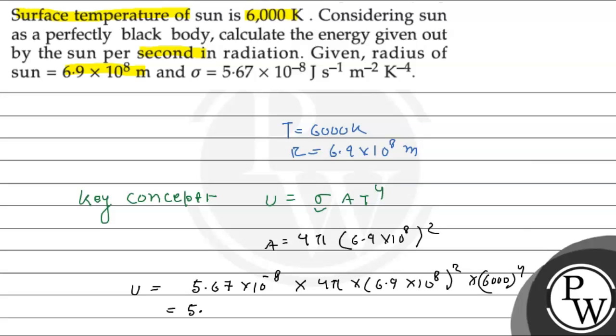This gives 5.67 into 10 to the power minus 8 into 4 into 3.14 into 6.9 square, this gives 10 to the power 16, into 6 to the power 4, this gives 10 to the power 12.